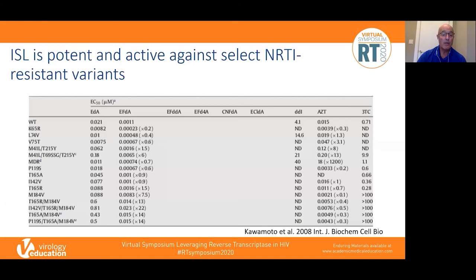Resistance to EFDA is conferred by the M184V mutation, and in this experiment the presence of M184V caused about a 7.5-fold reduction in susceptibility. However, this level of drug is quite easily achieved in vivo. In a study conducted by Merck, two monkeys infected with M184V viruses and with clear significant clinical progression were salvaged with Islatravir treatment alone. So it's very likely that Islatravir not only has potent activity against wild-type viruses, but also has excellent activity against a large selection of NRTI-resistant variants.